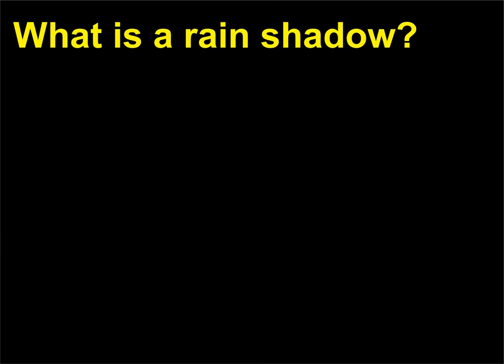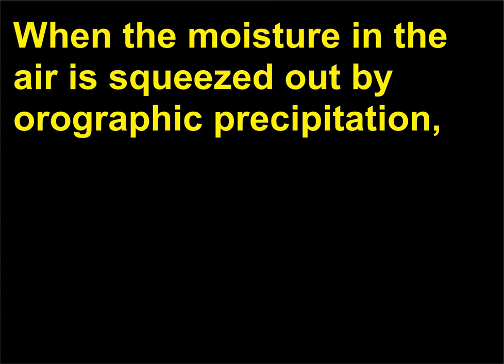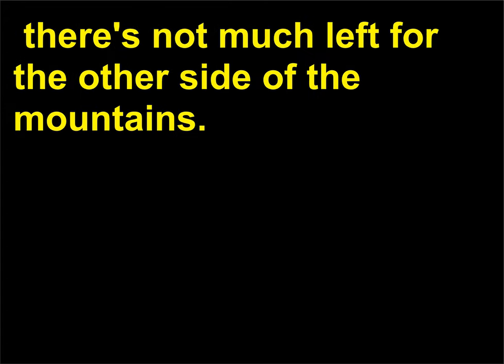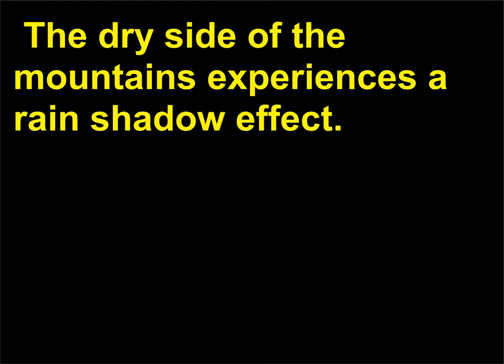What is a rain shadow? When the moisture in the air is squeezed out by orographic precipitation, there's not much left for the other side of the mountains. The dry side of the mountains experiences a rain shadow effect.